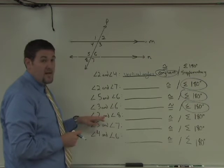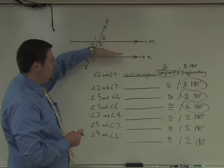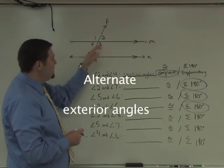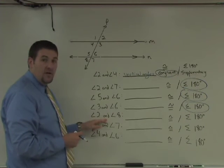Now let's look at 2 and 8. 2 and 8 are exterior to the parallel lines again, and they're on alternate sides of the transversal. We call these alternate exterior angles, and angles 2 and 8 are congruent.